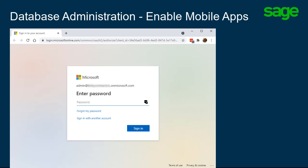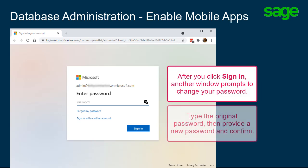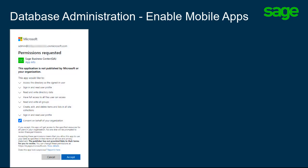Enter the temporary password from the email that you received. Next, Microsoft prompts for a password change. Type the original password, then provide a new one and confirm. After you confirm your login credentials, another window displays to confirm the permissions requested.